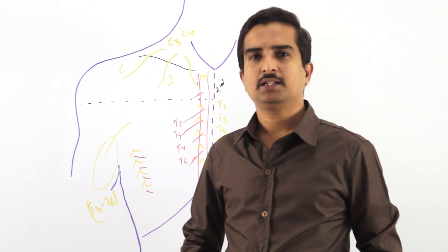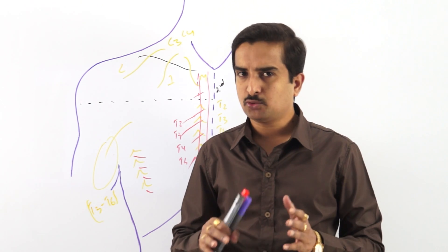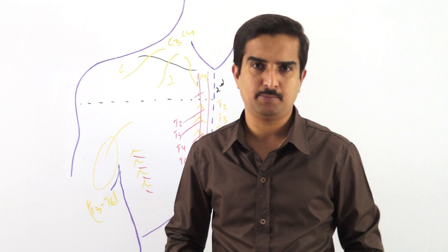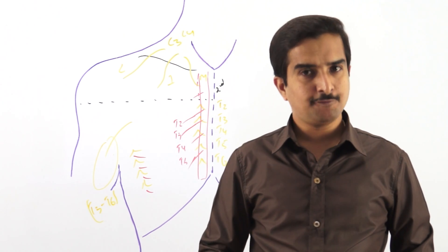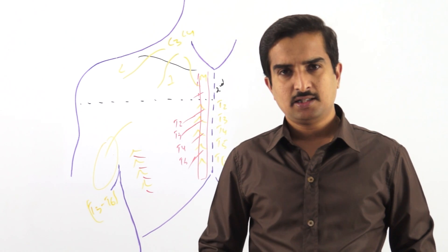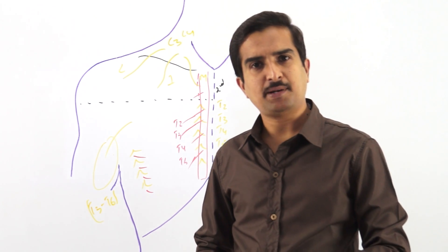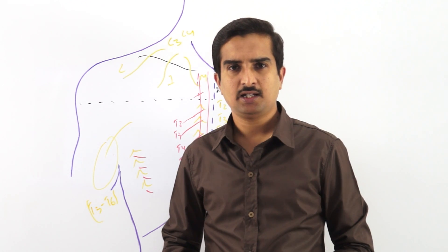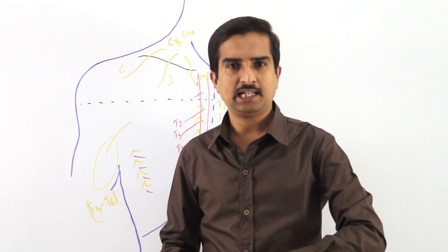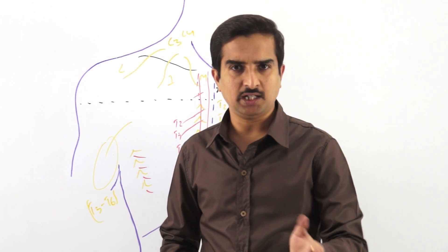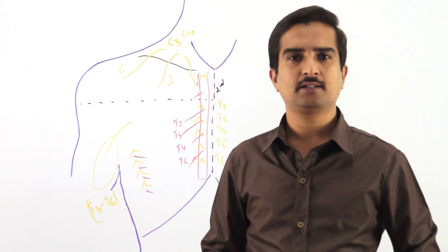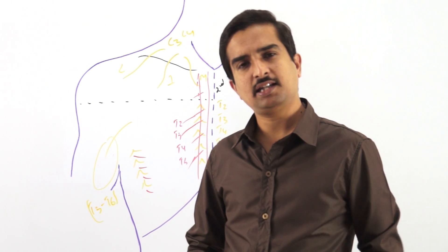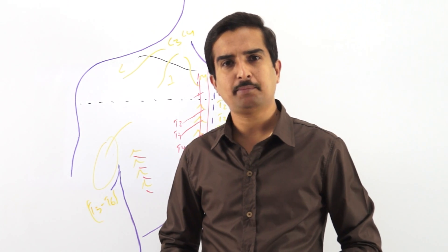Remember that these cutaneous vessels are actually very small branches. But in females, the perforating branches of the internal thoracic artery at the level of T2, T3, T4, and T5 are longer because they provide arterial supply to the breast region.